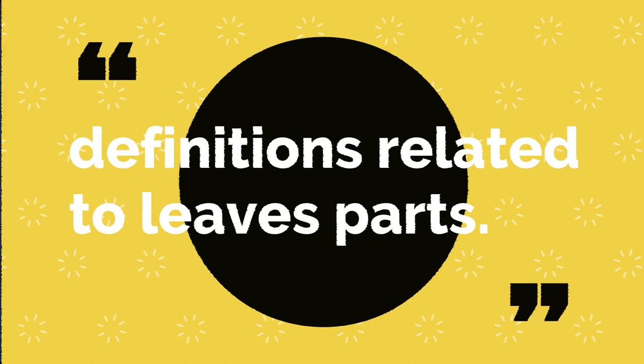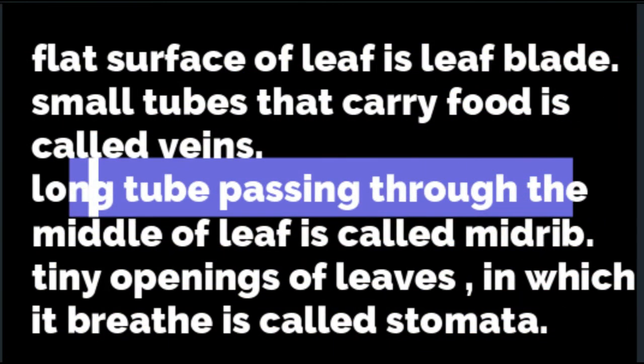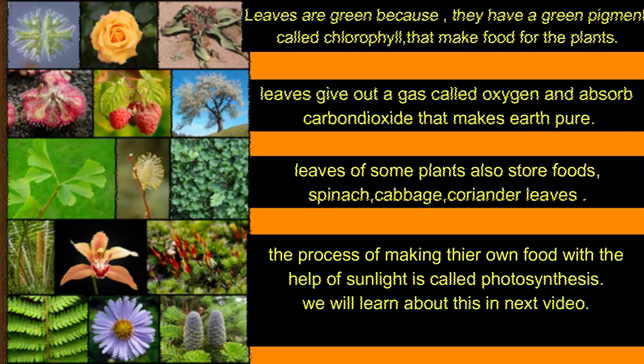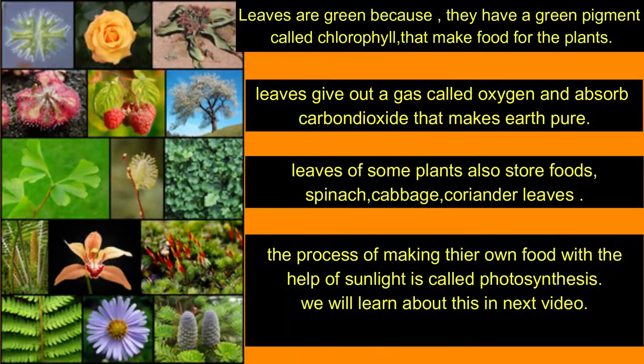Definitions related to leaf parts: the flat surface of a leaf is called the leaf blade. Small tubes that carry food are called veins. Long tubes passing through the middle of a leaf are called the midrib. Tiny openings of the leaf through which the leaf breathes are called stomata. Leaves are green because they have a pigment called chlorophyll that makes food for the plant.